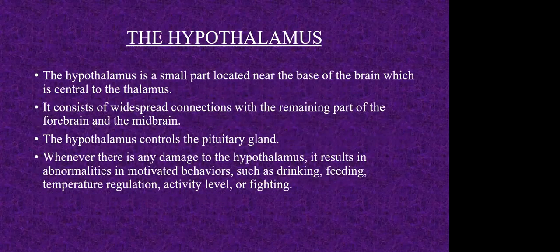The hypothalamus is a small structure located near the base of the brain, central to the thalamus. The hypothalamus basically controls the pituitary gland. The pituitary gland is an endocrine gland, meaning it secretes hormones inside our body — hormones which are required for several processes that happen inside our body. So the hypothalamus is in charge of the pituitary gland, and the pituitary gland secretes the hormones inside our body.